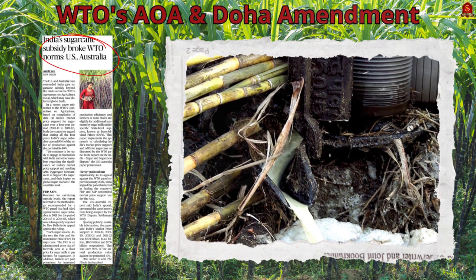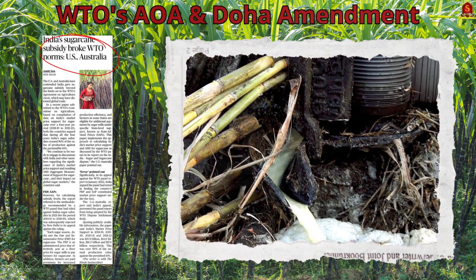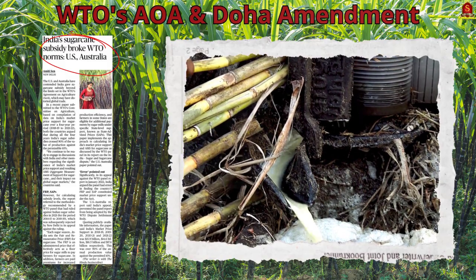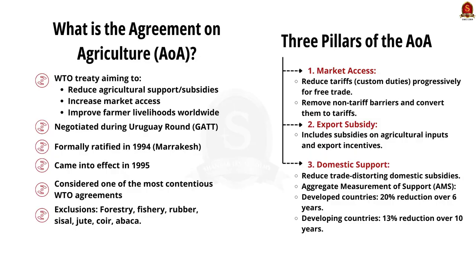With respect to the Agreement on Agriculture: the Agreement on Agriculture is a WTO treaty focusing on reducing agricultural support and subsidies given to domestic producers by countries. The aim is to establish a fairer trading system that will increase market access and improve the livelihoods of farmers around the world. It was negotiated during the Uruguay Round of GATT and formally ratified in 1994 at Marrakesh, Morocco, subsequently coming into force in 1995. It is one of the most contentious agreements within the WTO.